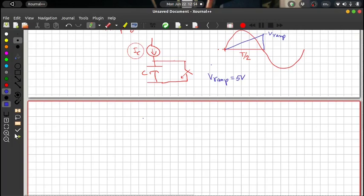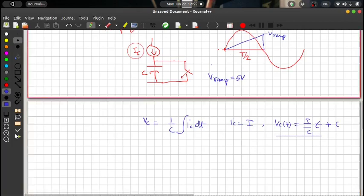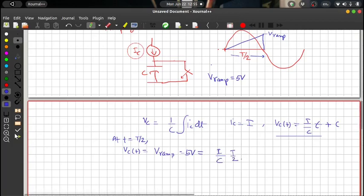We know that when you charge a capacitor C with IC as the charging current, the voltage across the capacitor is equal to 1 by C integral IC dt. And if I keep IC as a constant, then VC of T is equal to I by C into T plus the integration constant. So this represents the ramp. So at the end of time T by 2, the ramp voltage is V ramp. So at T is equal to T by 2, we have VC of T reaching V ramp, which is equal to our 5 volt. This is equal to I by C into T by 2.